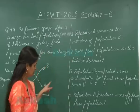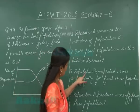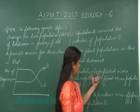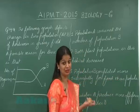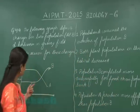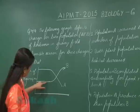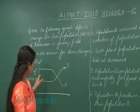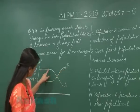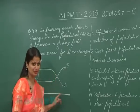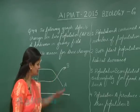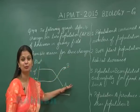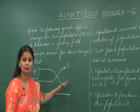Coming to option 3: population B competed more successfully for food than population A. Yes, this is quite visible from the graph. Population B's size is increasing while population A's size is decreasing. So this is the right option — population B is more superior as a herbivore compared to population A.